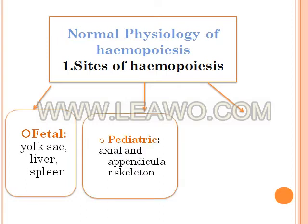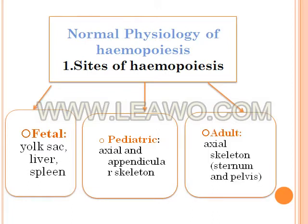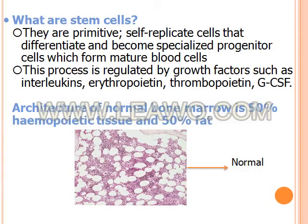During pediatric life, hemopoiesis occurs in axial and appendicular skeleton. During adult life, it occurs in axial skeleton only. Now, what are stem cells? Stem cells are primitive self-replicating cells that differentiate and become specialized progenitor cells which form mature blood cells.